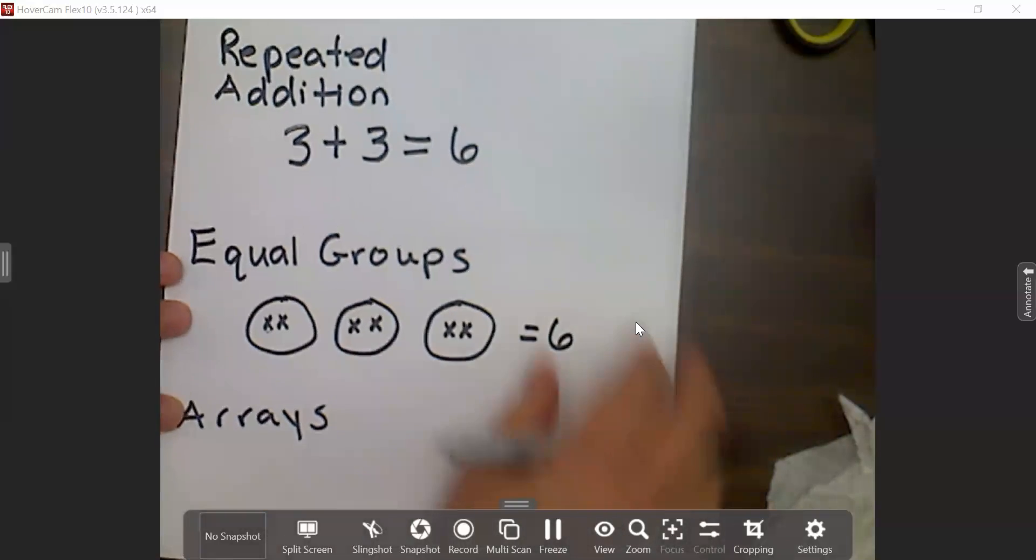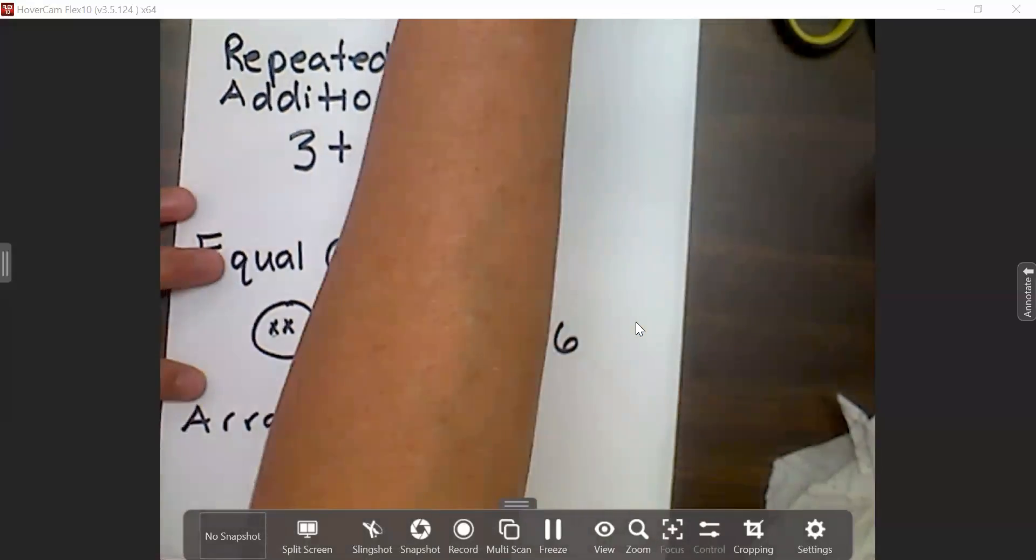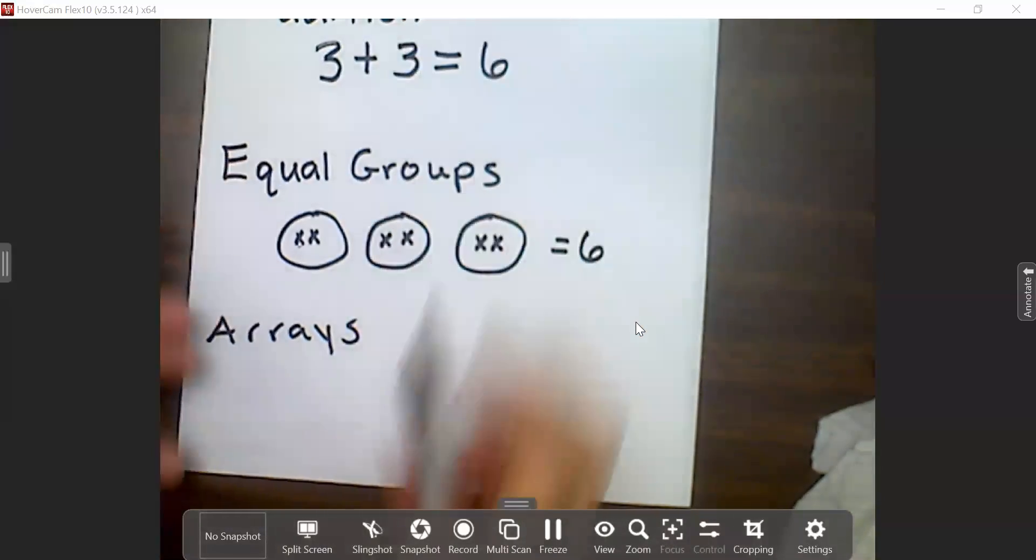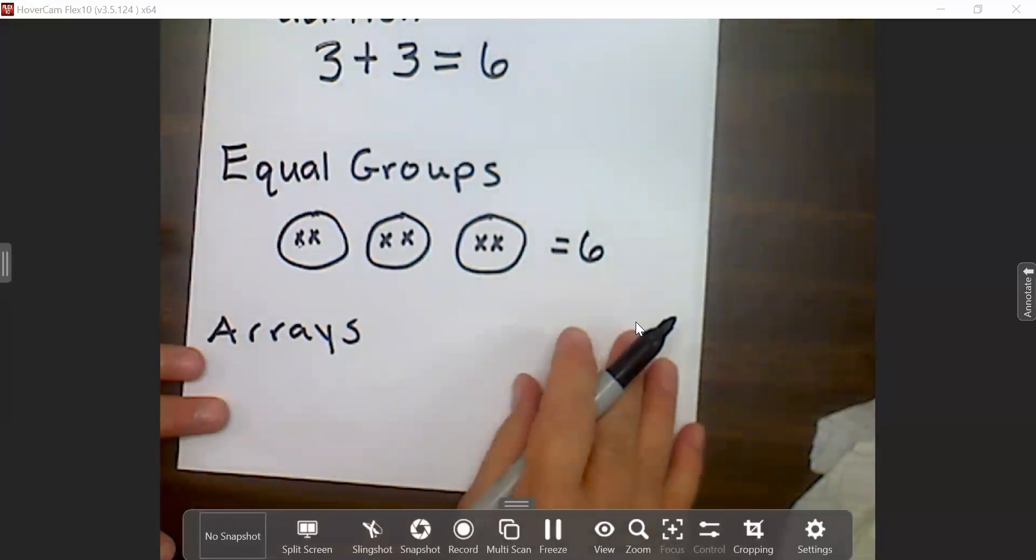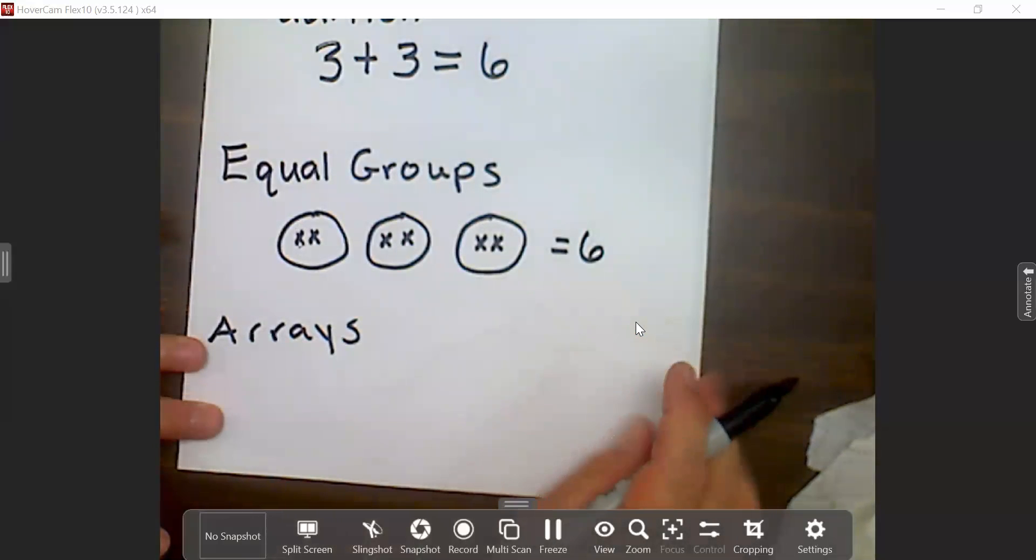The third strategy is drawing arrays. So an array is where we represent multiplication using rows and columns.